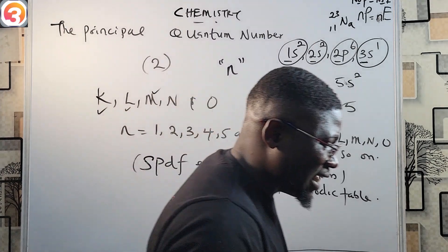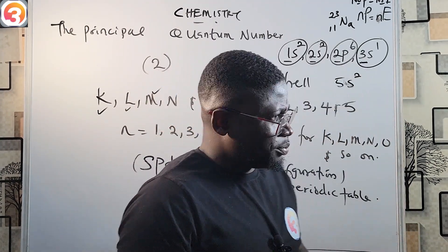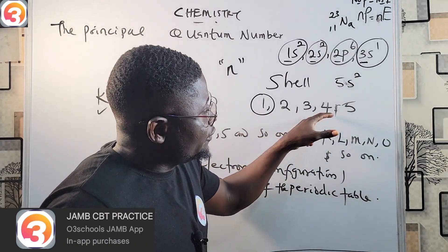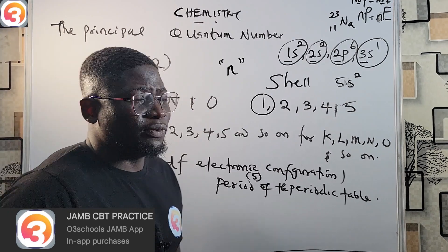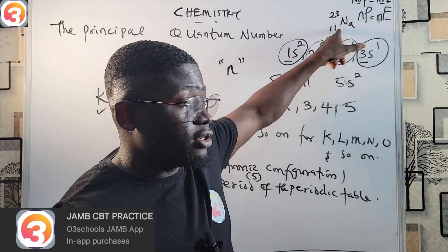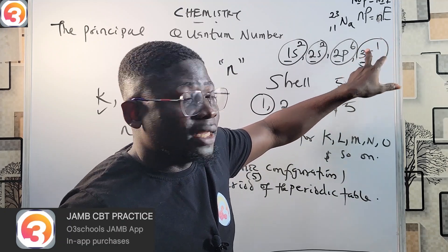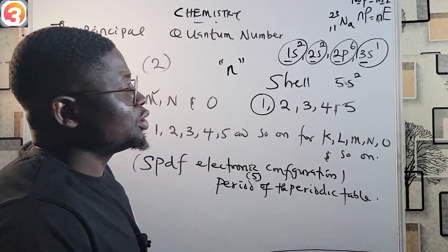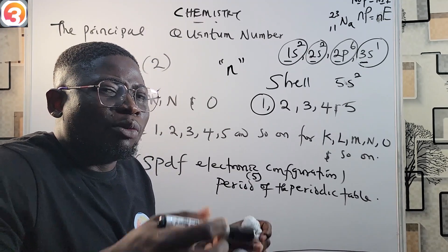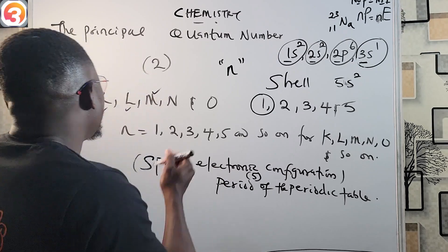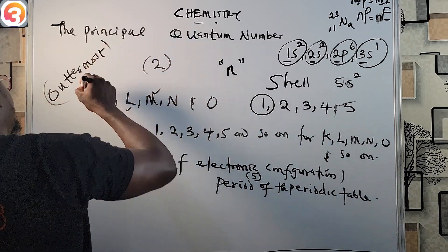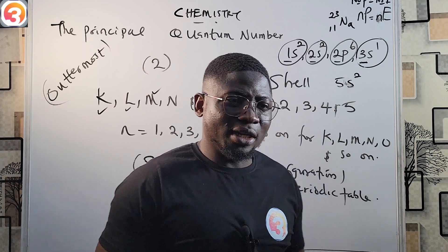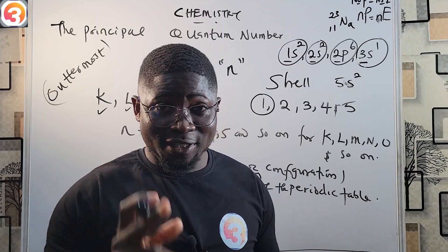To review: the principal quantum number is represented by the letter n and gives the information of the shell to which an element belongs. The K, L, M, N, and O shells correspond to principal quantum numbers 1, 2, 3, 4, and 5 respectively. It is also useful in writing spdf electronic configuration, and the largest principal quantum number indicates the shell of the outermost electron and the period of the element. Next class we will look at the azimuthal or subsidiary quantum number.